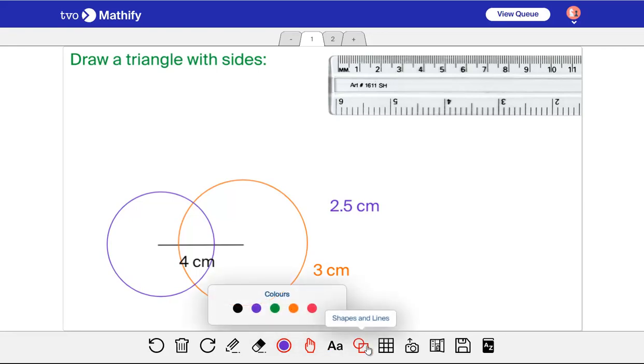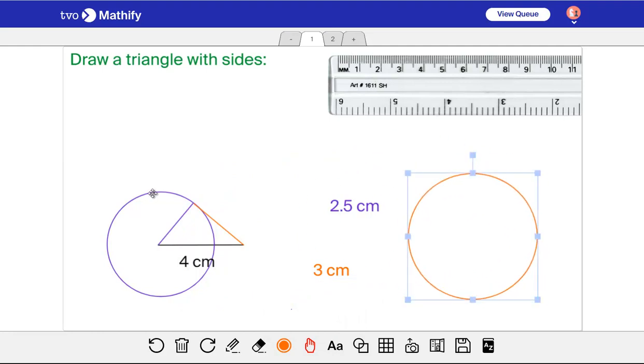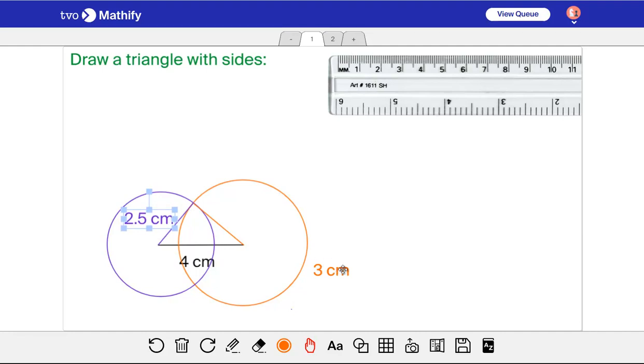So what I'm going to do now is I'm going to draw a line from this end. And I'm drawing up to where those circles cross. So that's going to be my 2.5 centimeter side. And this will be my three centimeter side here. Because I made those circles just a certain size. This is supposed to have a radius of 2.5. And this one is supposed to have a radius of 3. Where they cross gives me the point at the other side of the triangle. That's 2.5 from here and 3 from here.